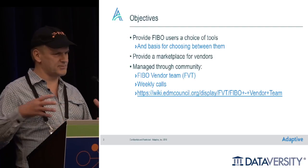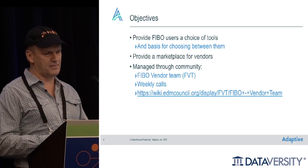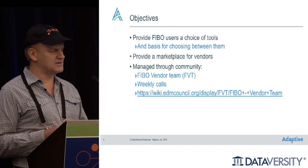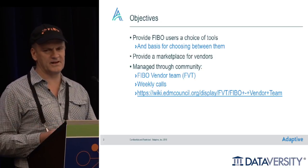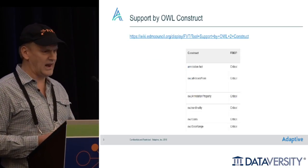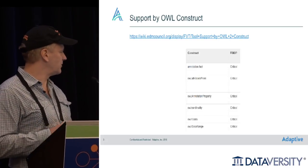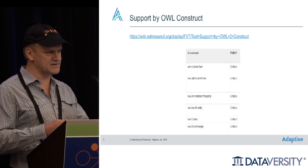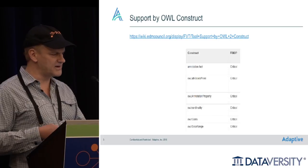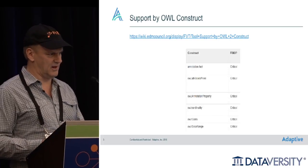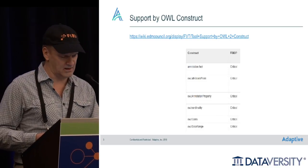As part of the wiki, they have weekly meetings with minutes. They've been building a number of online tables of different criteria — four different tables allowing people to categorize information about different tools. One of these is support by OWL construct, which for ontology tools allows vendors to list which OWL constructs they support.